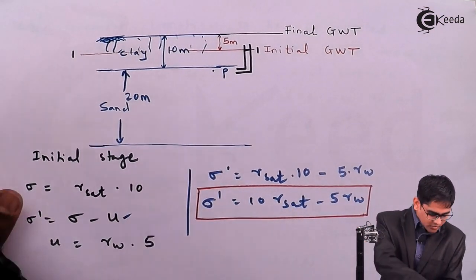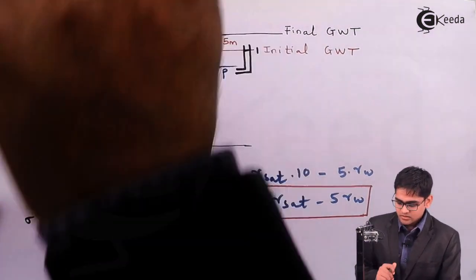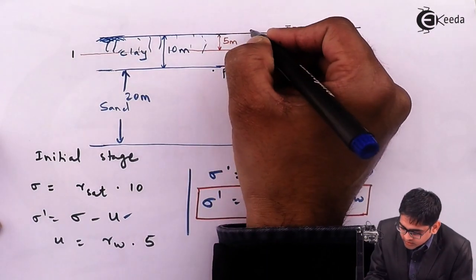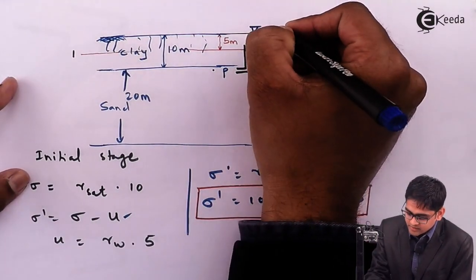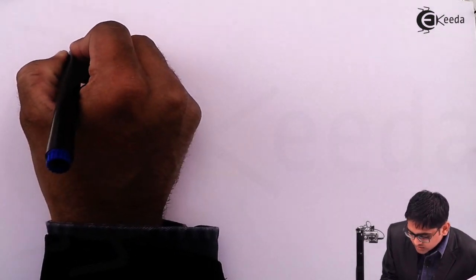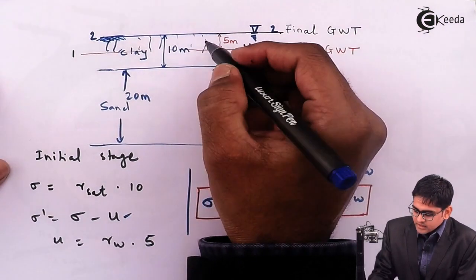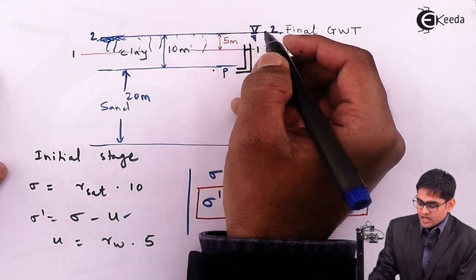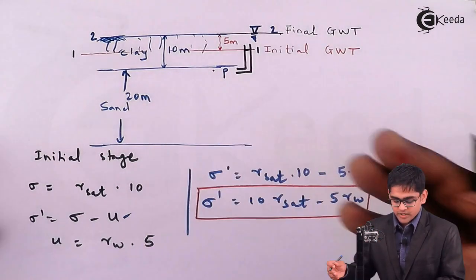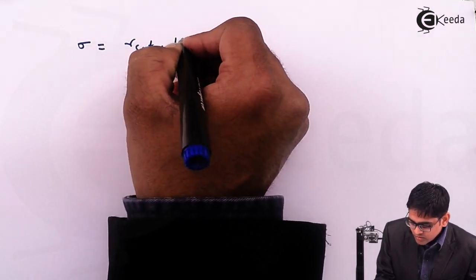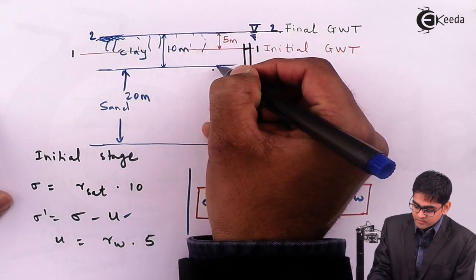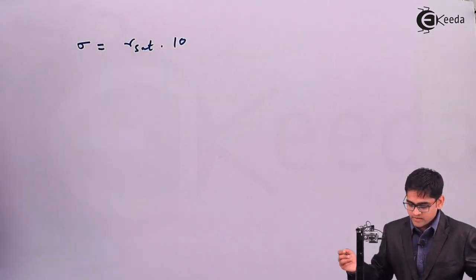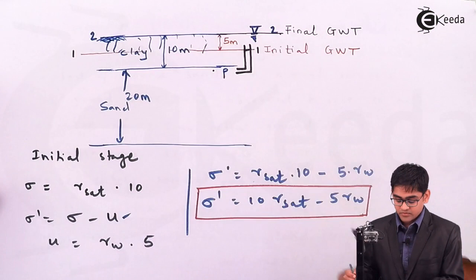Now the groundwater table rises to the ground level — this is level 2. The total stress at point P becomes γ_saturated × 10, which remains the same as before. Since the soil was already capillary saturated initially, after the water table rises, we still use saturated density. So total stress is unchanged at γ_saturated × 10.